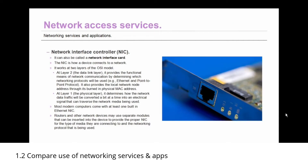The first network access service I'm going to discuss is actually a piece of hardware — the Network Interface Controller, or NIC, also called the network interface card. The NIC is how a device connects to a network, and it works at two layers of the OSI model. At layer two, the data link layer, it provides the functional means of network communication by determining which networking protocols will be used, and provides the local network node address through its burned-in physical Media Access Control address. At layer one, the physical layer, the network interface controller determines how the network data traffic will be converted, a bit at a time, into an electrical signal that can traverse the network media being used — providing the connection to the network.